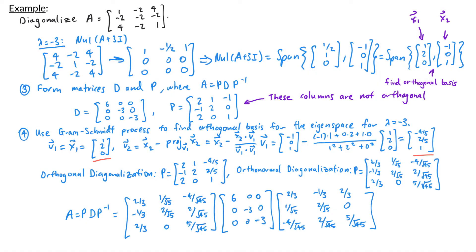So that's the orthonormal diagonalization for A. In our next video, we'll talk about something called the spectral theorem and also spectral decomposition.